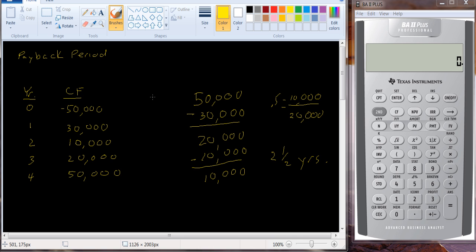The problem with the payback period is that it doesn't account for a lot of the things that we said were necessary for a good capital budgeting technique. It doesn't consider all the cash flows. After half a year, we ignore this cash flow. We ignore the rest of the cash flows.